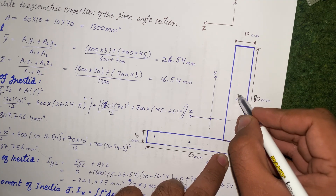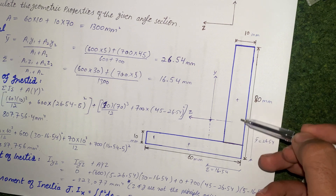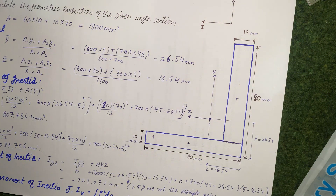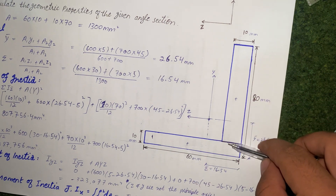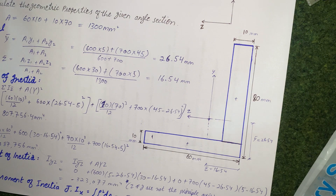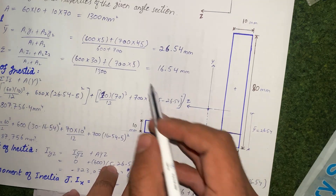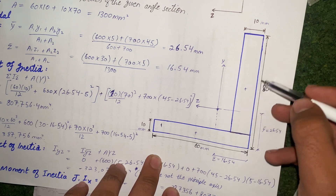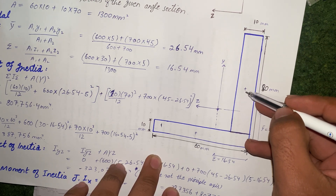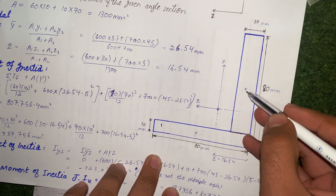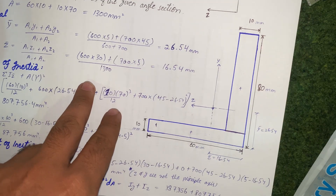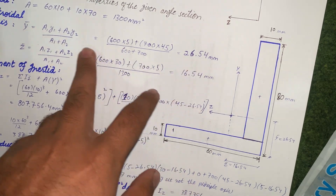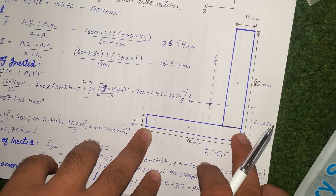The distance y₂ is from the reference axis to the centroid of rectangle 2. The centroid of rectangle 2 is at half its height: 70/2 = 35, plus the 10 mm offset, giving y₂ = 45 mm. Substituting these values, ȳ comes out to 26.54 mm from the reference axis.